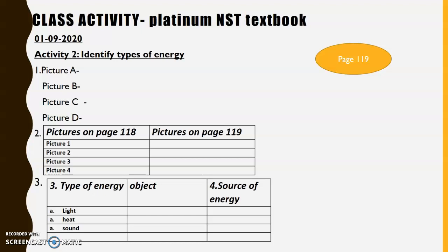Let's read question 1: name the source of energy in each of the pictures. You look at pictures A, B, C, and D and write what you see, because what you see is actually the source of energy. Question 2 says match each source of energy with a picture on page 118 — pictures 1 to 4 — which you need to re-look at. I've done the first one for you: picture 1 matches picture B, because the torch gives off light energy but it needs batteries to do so.